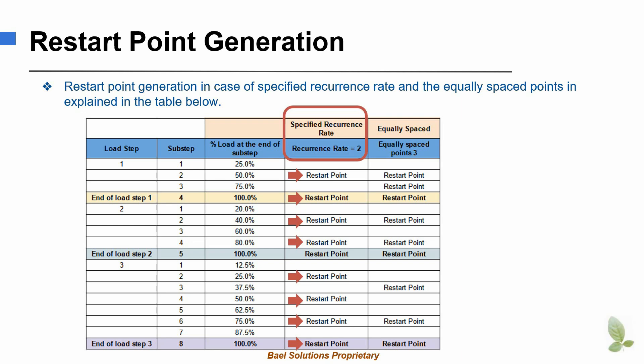For the first load step, a restart point is written at the second and the fourth, that is the last sub-step. For the second load step, a restart point is written for the second, fourth and the fifth sub-step. Note that although sub-step number 5 does not coincide with the recurrence rate of 2, a restart point is still written. This is because it is the last sub-step in load step 2.